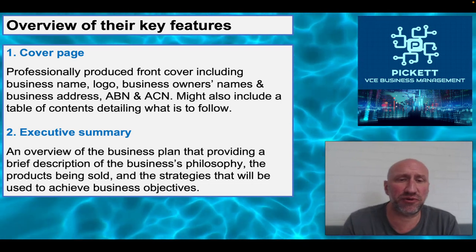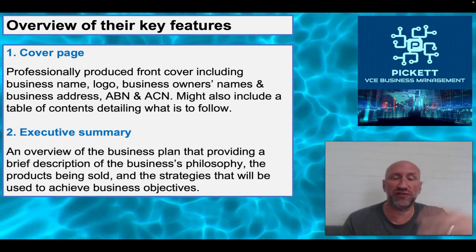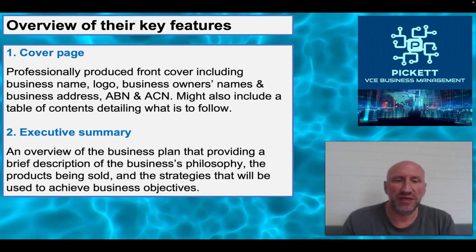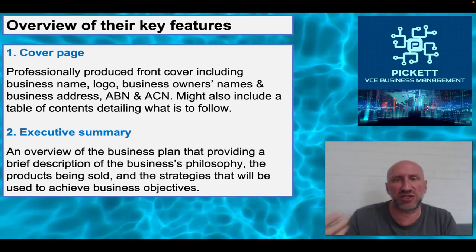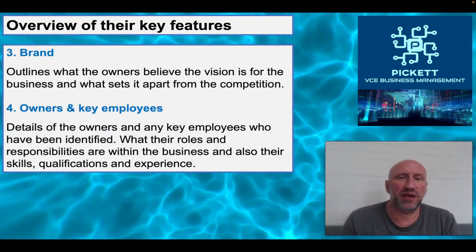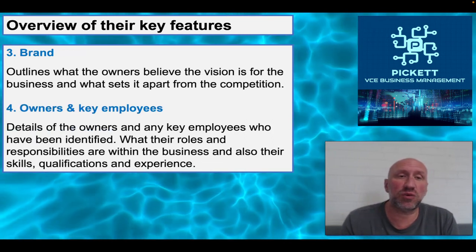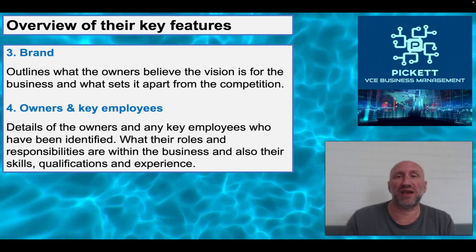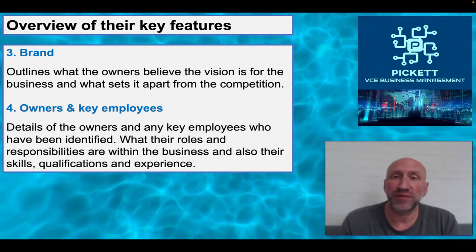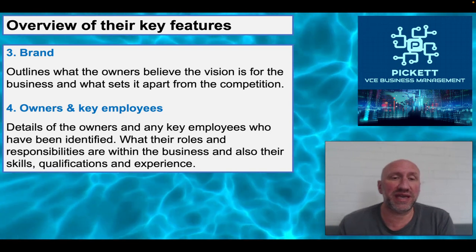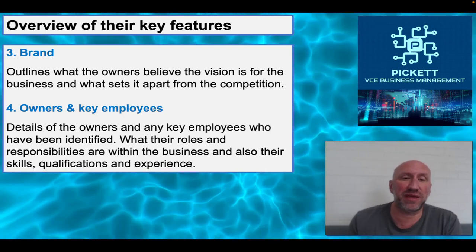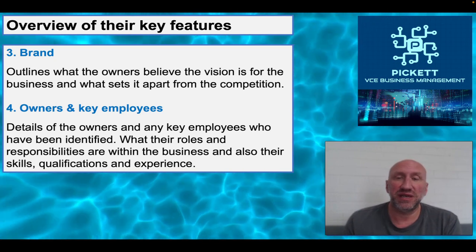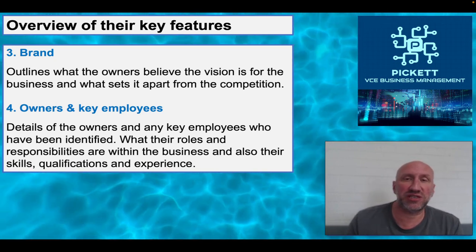Then an executive summary, which is an overview of the business plan giving a brief description of what's to come, an outline of strategies you're going to be using, and information on branding — what the owners believe the vision for the business is and what's going to set it apart from the competition. Third, information on the owners and key employees: their details, roles and responsibilities within the business, and their skills, qualifications and experience.